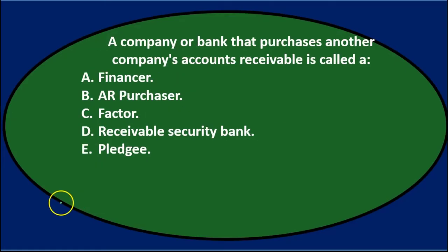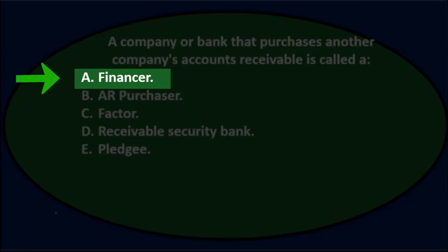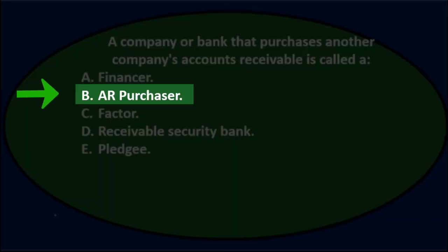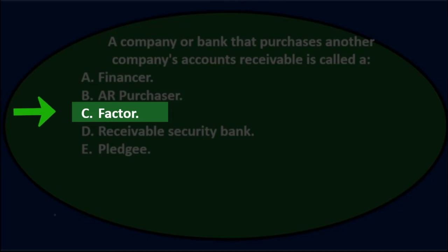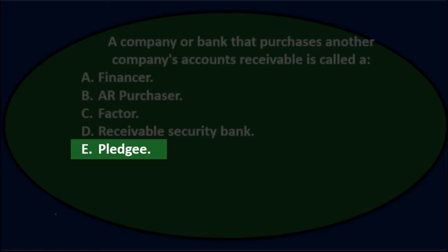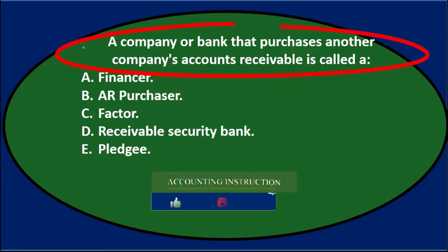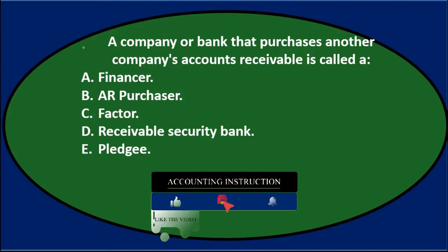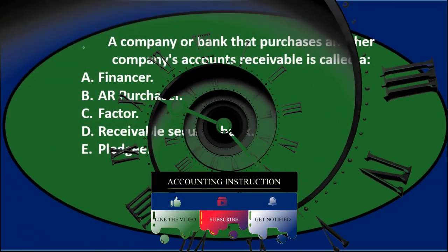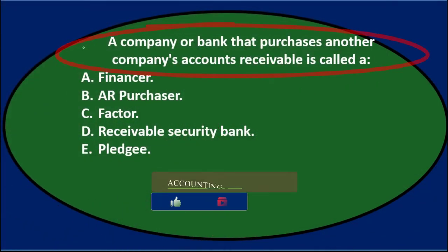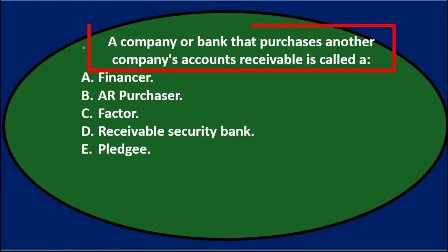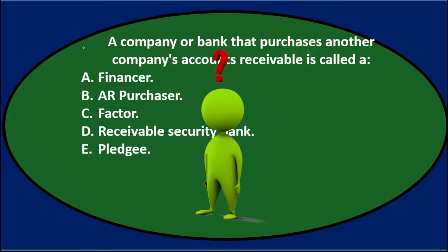Next question: A company or bank that purchases another company's accounts receivable is called — A. A financer, B. AR or accounts receivable purchaser, C. Factor, D. Receivable security bank, or E. Pledgee. This is a terminology question — there's no real theory involved, we just need to know the term for a company or bank that purchases the accounts receivable of another.